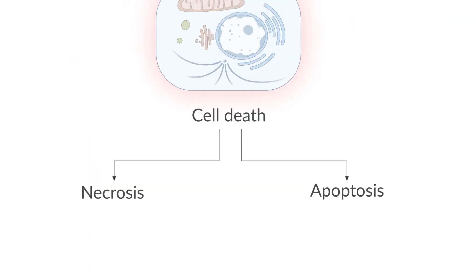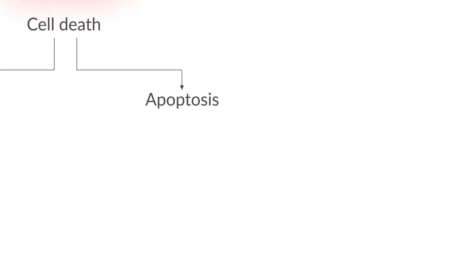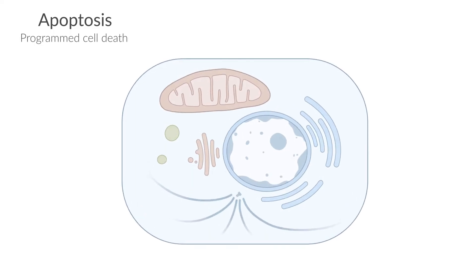Similar to necrosis, cell degradation during apoptosis follows a distinct pattern. However, the process by which cell organelles degrade is more tightly controlled. Therefore, apoptosis is often referred to as programmed cell death. Let's take a closer look at apoptosis.